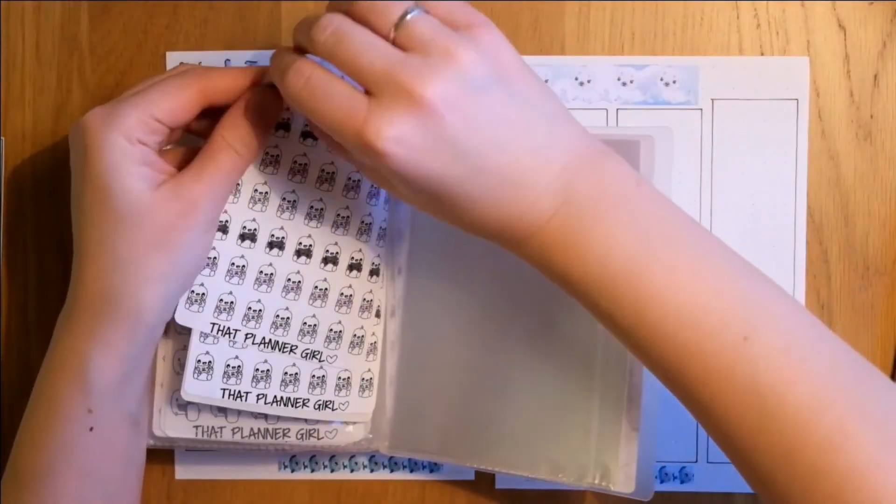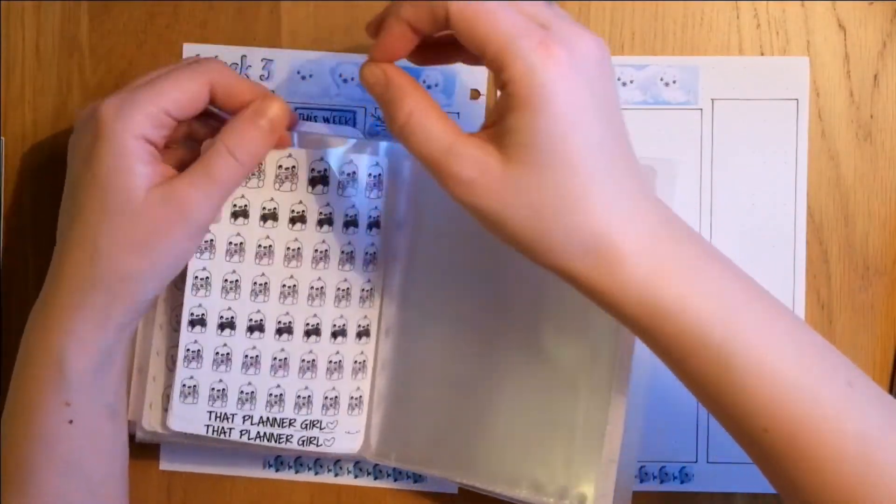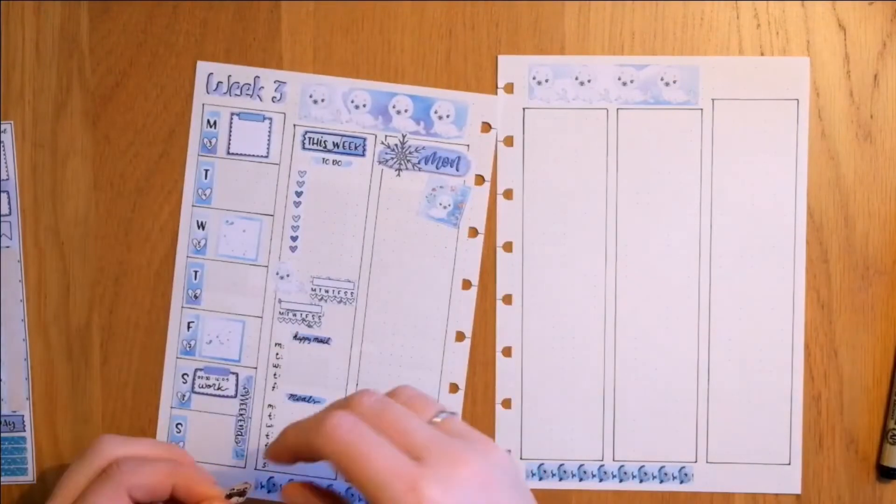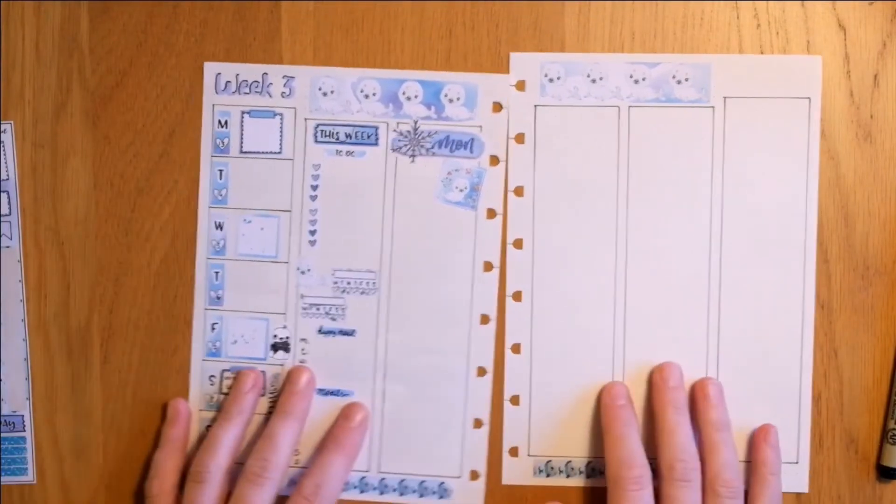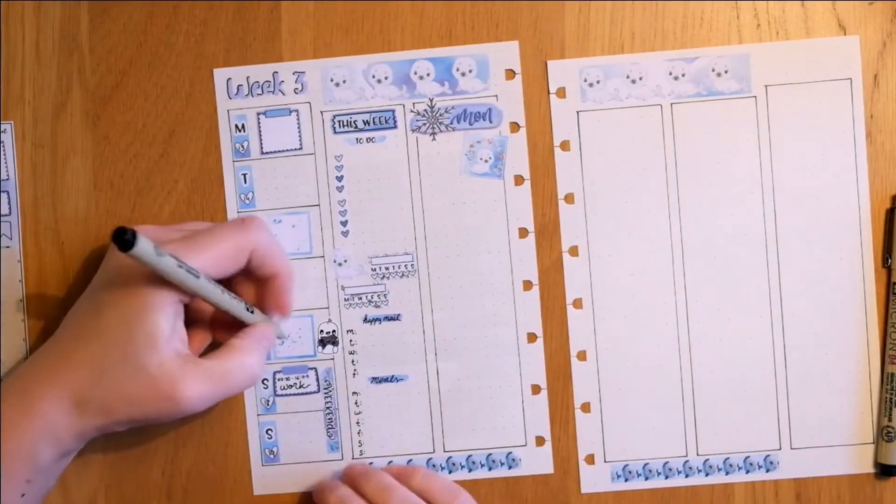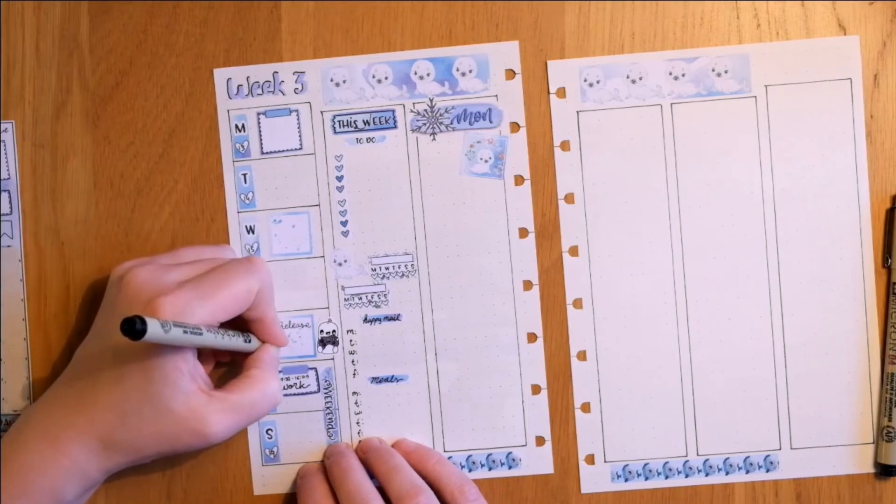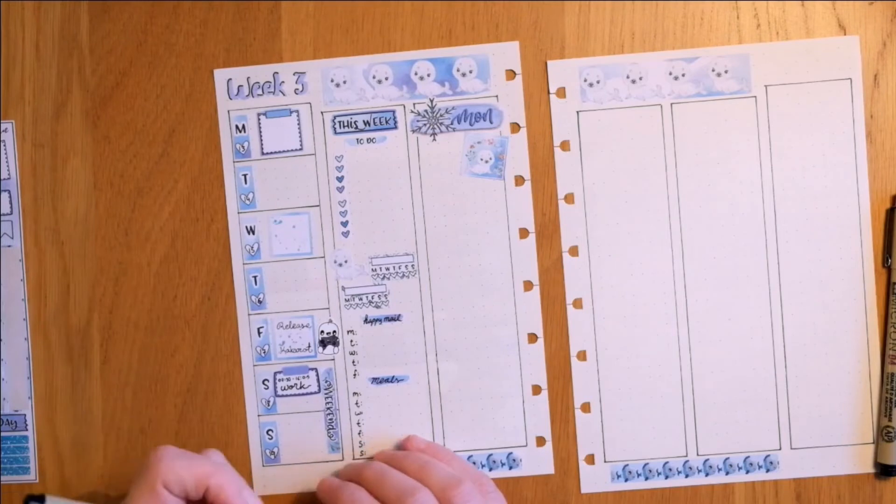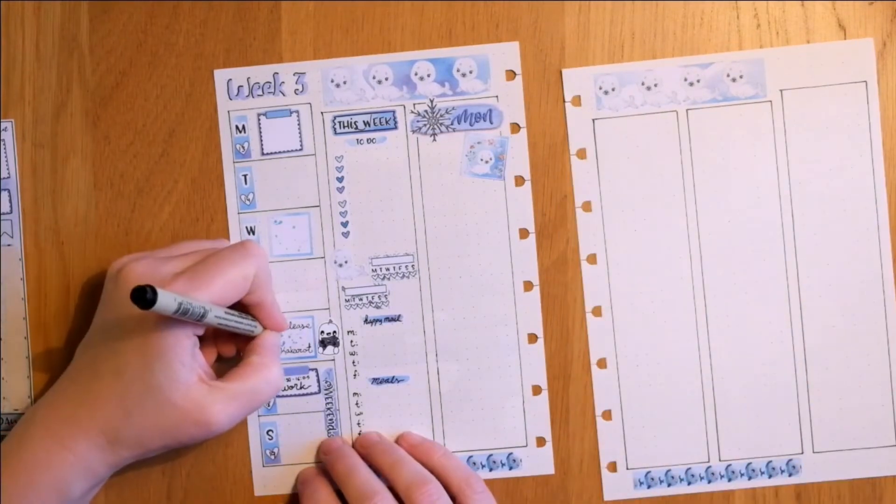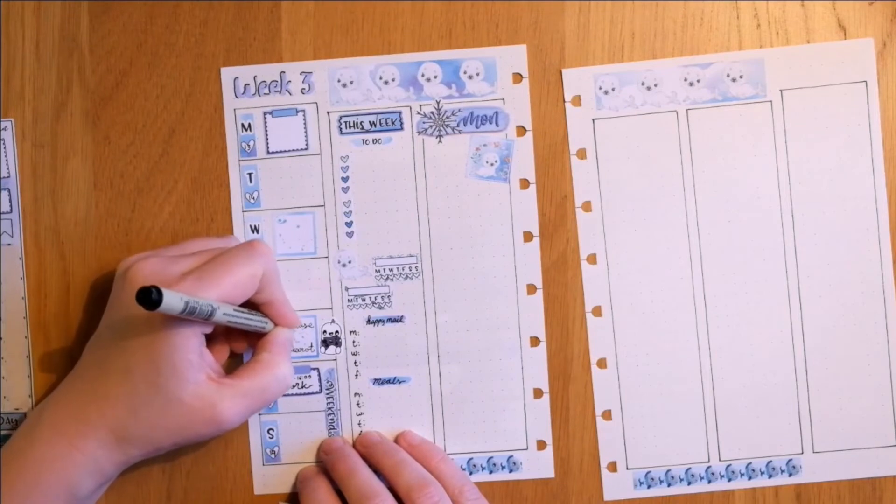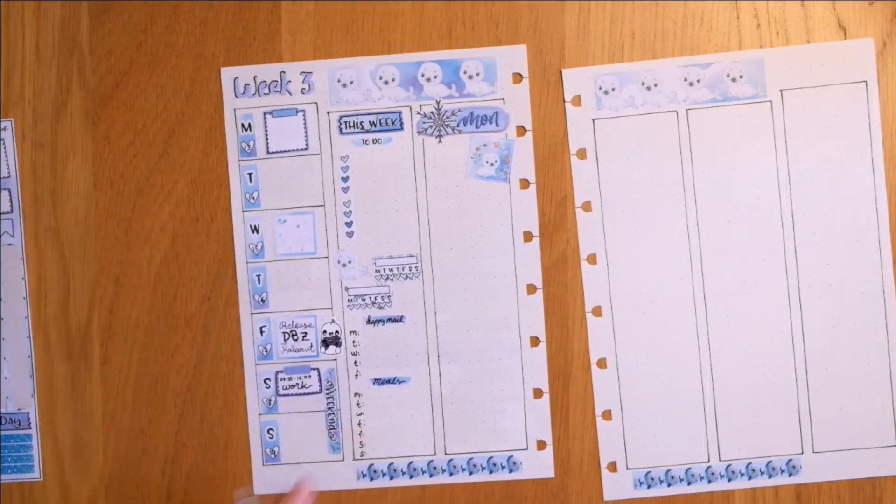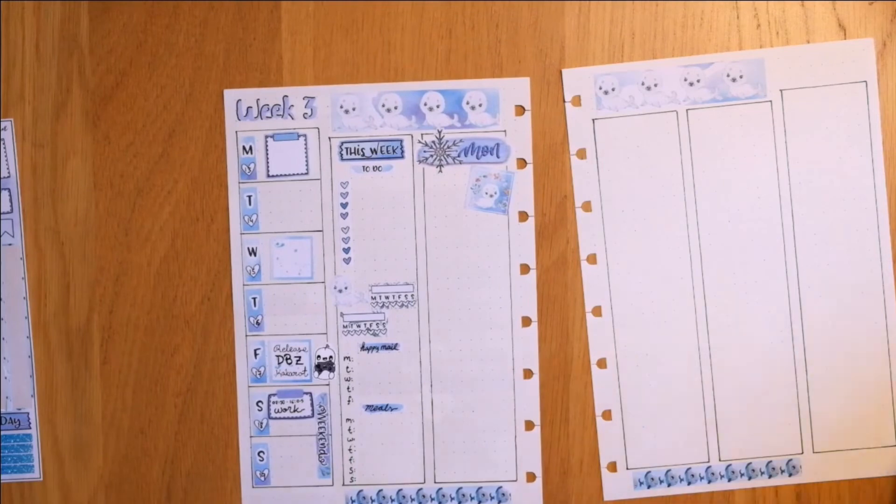I just got this sticker sheet a few days ago from That Planner Girl. And the postage takes a bit of time, but it's so worth it. Those stickers are so cute. And that's a character with a console game, console stick, which is awesome for gamers at least. So I like that. And I'm just writing in whatever game it is.